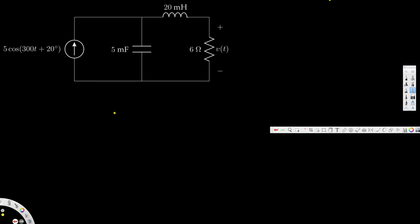Hello everyone, in this video we are going to see an example of sinusoidal steady state phasor analysis. In this particular problem we are asked to find out the voltage across this six ohm resistor. We have this circuit in time domain, and we are going to convert it into phasor to find out this voltage. Let's go ahead and convert this one into phasor.